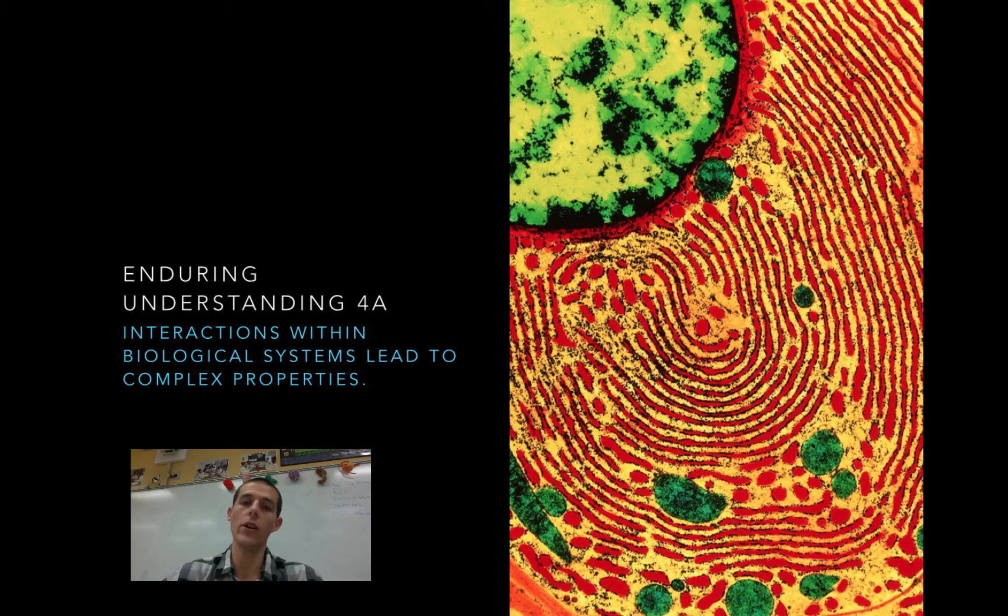Then, we'll look at interactions within an organism, so that would be like organs and organ systems, and then we'll look at interactions between organisms, and then we'll look at interactions within ecosystems. For each of the enduring understandings, we are going to follow that same pattern. This first one, we're just going to look at the properties that come out of these interactions.